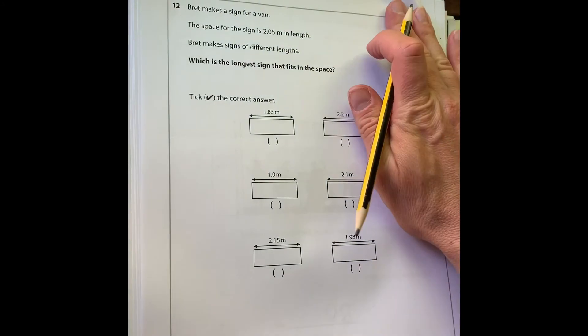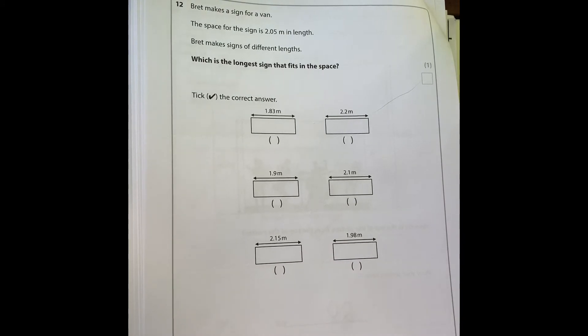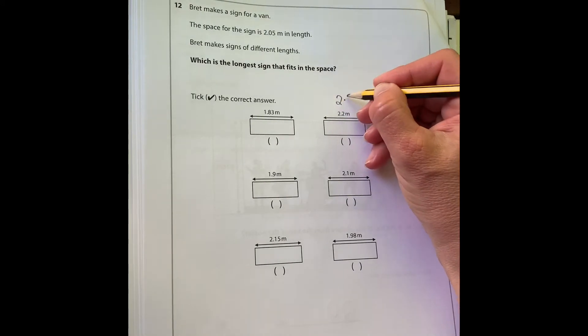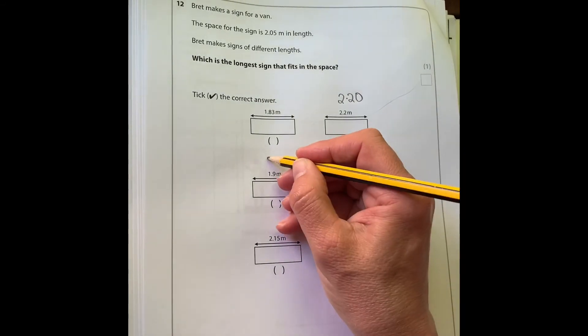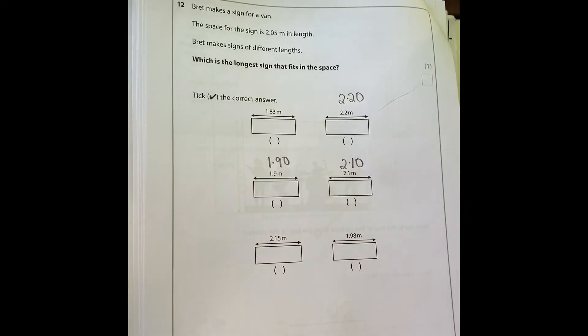Number 12: Brett makes a sign for a van. The space for the sign is 2.05 meters in length. Brett makes signs of different lengths. Which is the longest sign that can fit in the space? We need to be a little bit careful here. What I'm going to do is make everything have two numbers after the decimal point. So I'm going to rewrite this one as 2.20, this one as 2.10, and this one as 1.90.